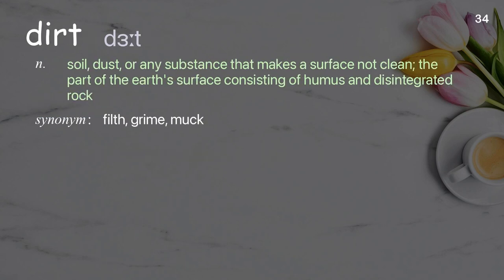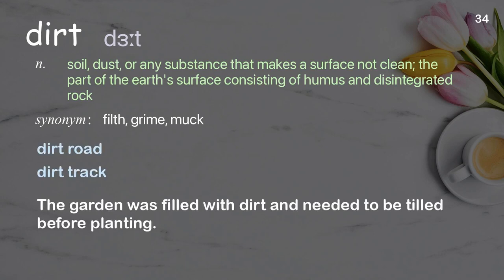Dirt: soil, dust, or any substance that makes a surface not clean; the part of the Earth's surface consisting of humus and disintegrated rock. Examples: dirt road, dirt track. The garden was filled with dirt and needed to be tilled before planting.